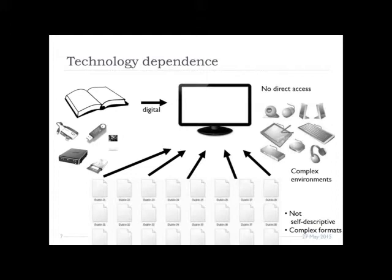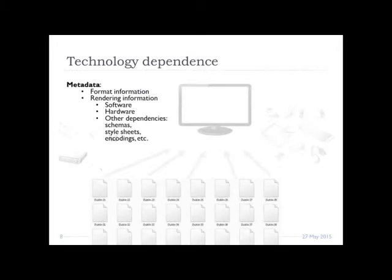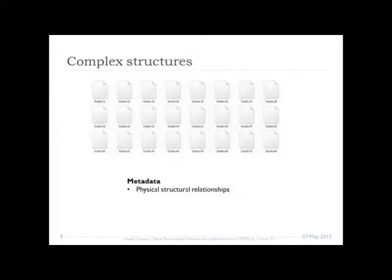There is a technological barrier to accessing digital files. I depend on data carriers, on media hardware, on peripherals and processors and input/output devices before I can finally access the content. So I need metadata that helps me describe this whole technological stack so that I can recreate it in the future and still access the object. The first form of metadata needed is format information and rendering information about software and hardware, but also about any other technical dependencies — for example, if I have XML files I might need schemas, stylesheets, character encoding, and so on.